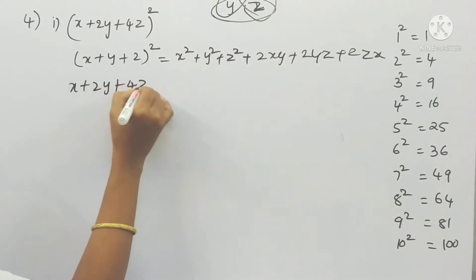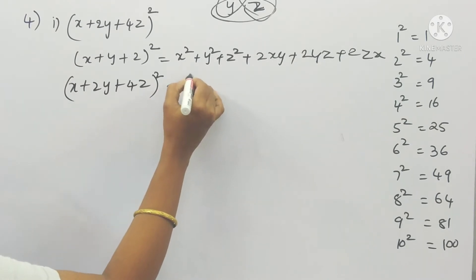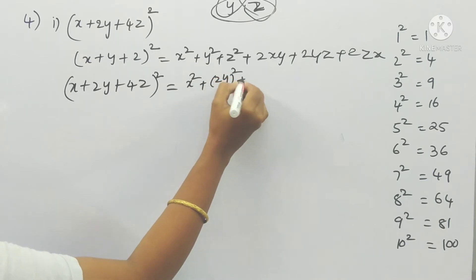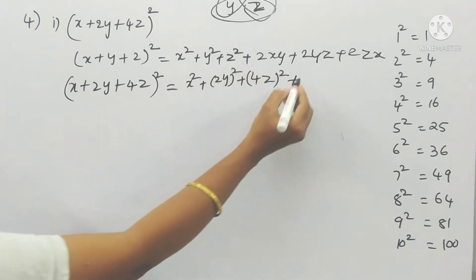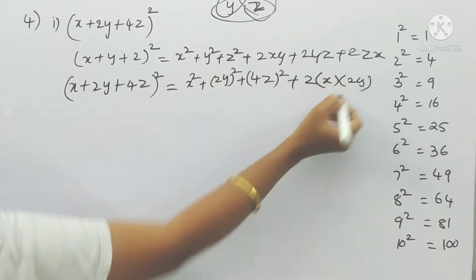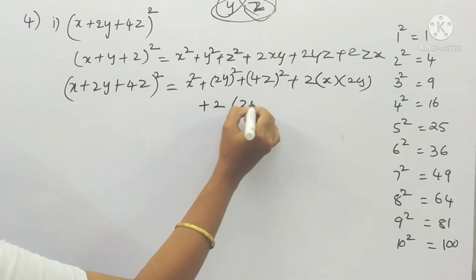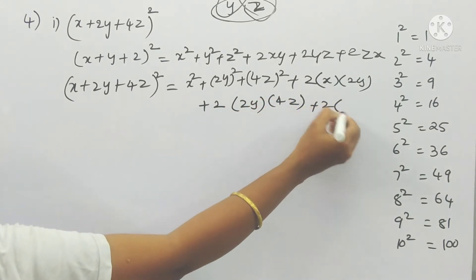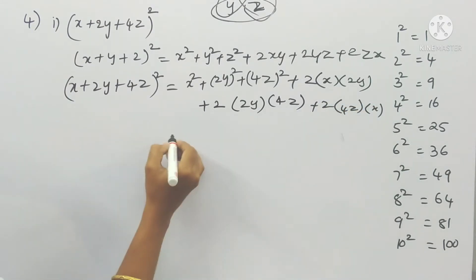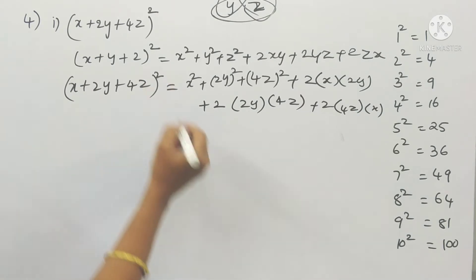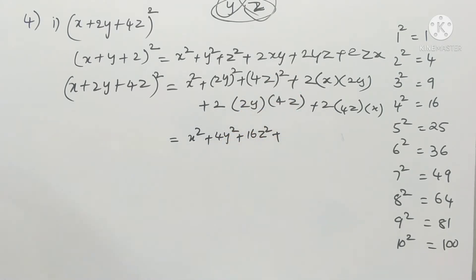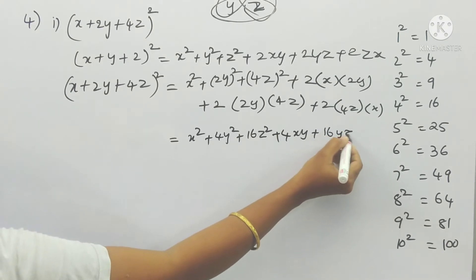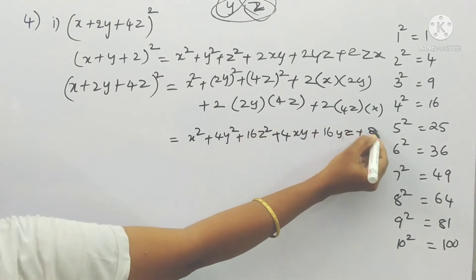In the same way we can write this. In the place of x: x only. In the place of y: 2y. In the place of z: 4z. So substituting: x² + (2y)² + (4z)² + 2·x·2y + 2·2y·4z + 2·4z·x. After simplification we get: x² + 4y² + 16z² + 4xy + 16yz + 8zx.